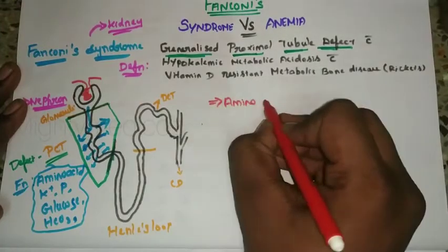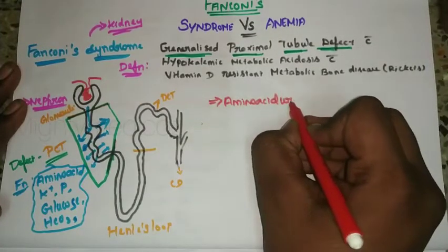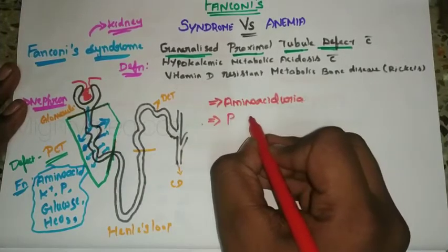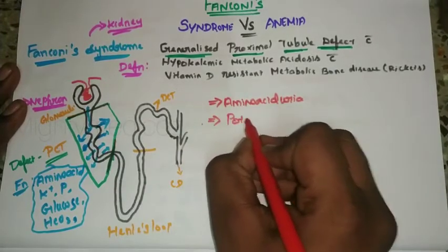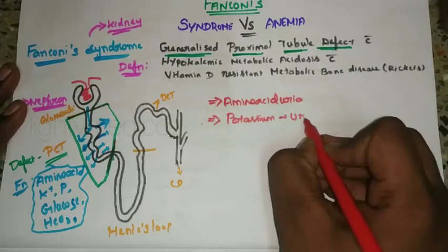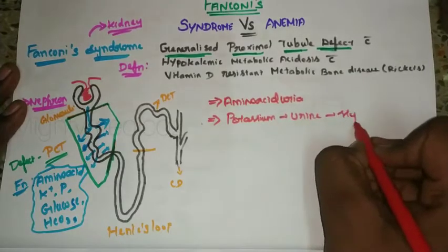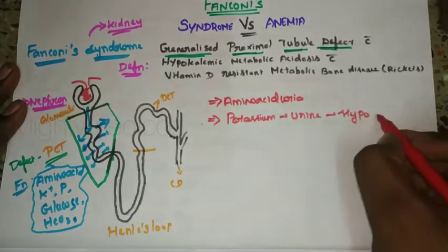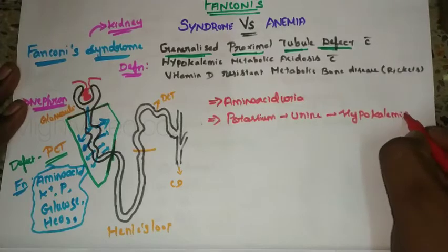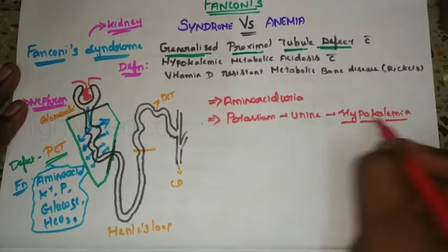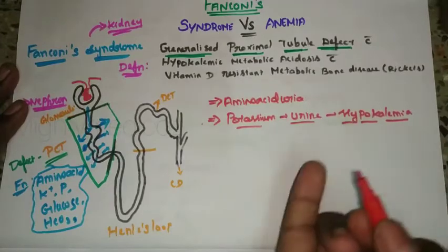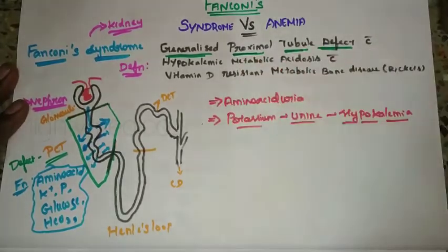When the proximal tubule is defective, amino acids are not reabsorbed and are lost in the urine. Similarly, potassium is lost in the urine instead of being reabsorbed, causing hypokalemia — that is, low potassium in the blood.